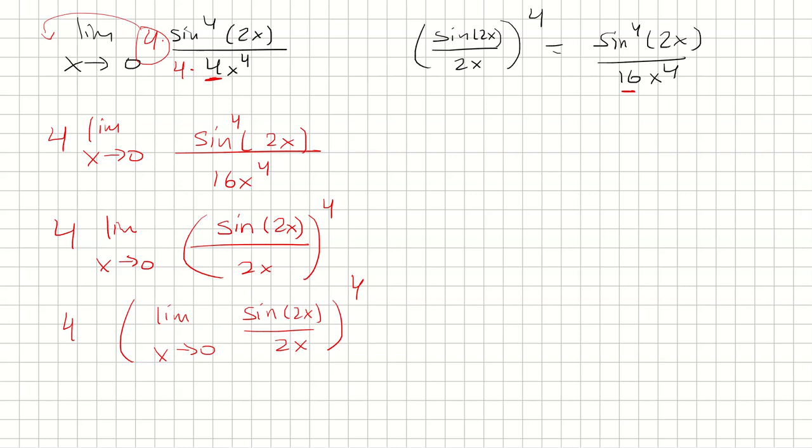Now at this point, I'm going to rewrite this so that instead of 2x, I have theta. And as x approaches 0, theta will also approach 0, because 2 times 0 is just 0.